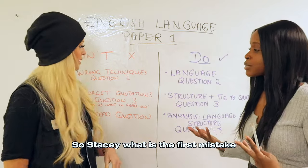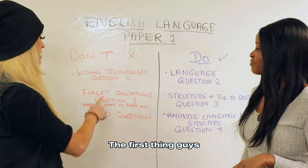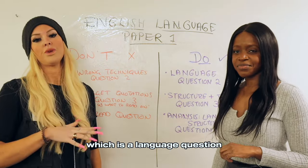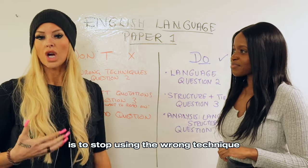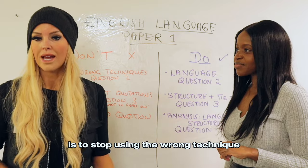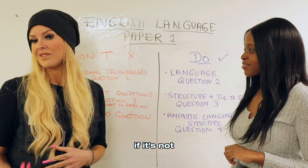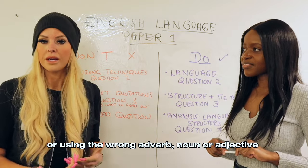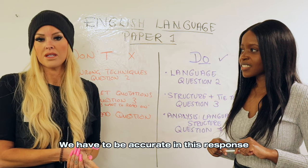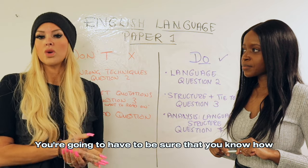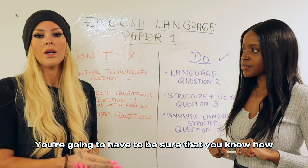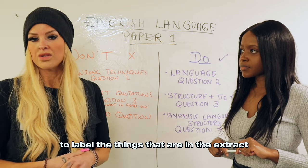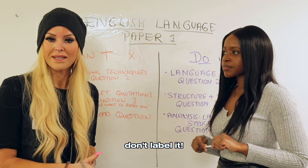So, the first thing we encourage you not to do in question two, which is a language question, is to start using the wrong technique — labelling something as a simile if it's not, or using the wrong adverb, noun, or adjective. We have to be accurate in this response. You need to be sure that you know how to label the things that are in the extract, and if you don't know, don't label it.